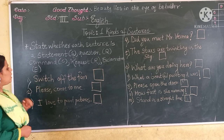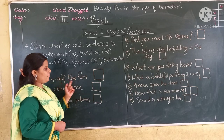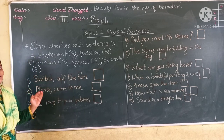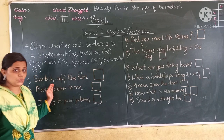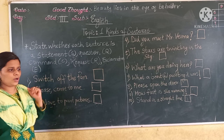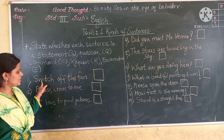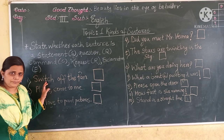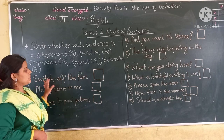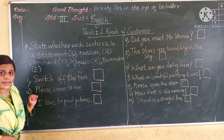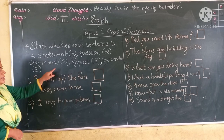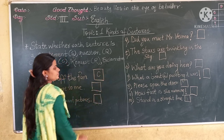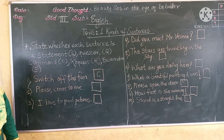The first sentence is: Switch off the fan. Now students, this sentence gives you an order — it gives you a command. So when the sentence gives you a command or order, that is which type of sentence? That is command. So I will write here C.